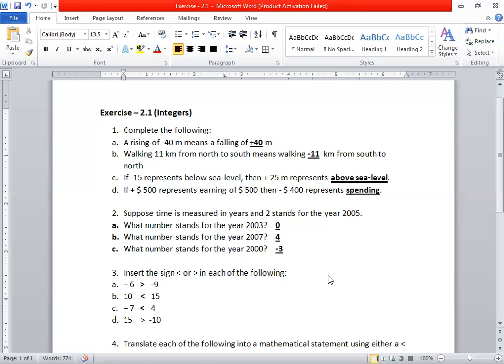Go back from 2005 to 2000. Count: 2005, 2004, 2003, 2002, 2001 - five numbers. 2005 is 2, then 1, 0, minus 1, minus 2, minus 3. So the answer for 2000 is minus 3.